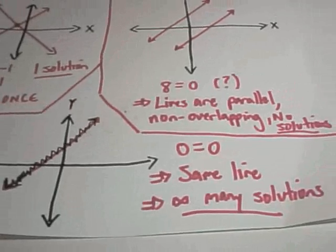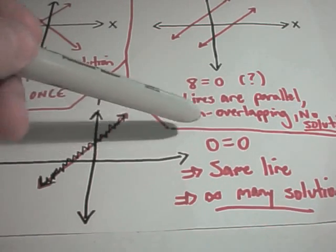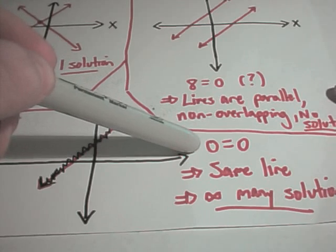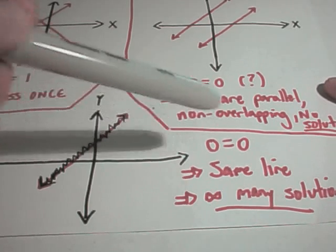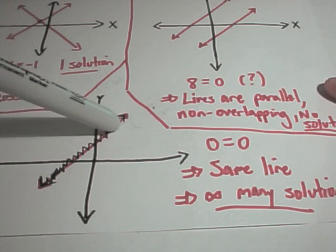The last thing that can happen is you'll end up doing some algebra and you'll get a statement like 0 equals 0, or 12 equals 12, or 5 equals 5. And what that means is, it's just the exact same line.